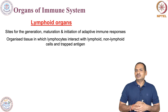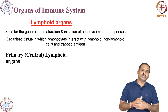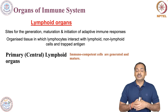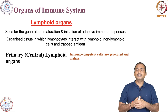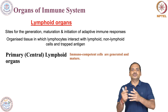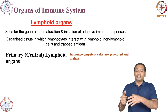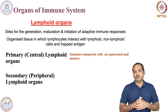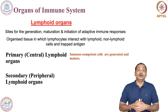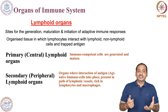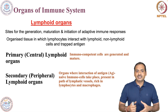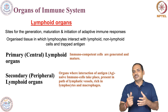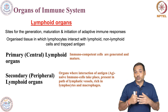Lymphoid organs are basically of two major kinds. One is the primary or central lymphoid organ, which is the site for the generation of immunocompetent immune cells or lymphocytes, where these cells will mature and then move to another site where they will encounter antigen. The other organ where they move is called the secondary or peripheral lymphoid organ, located in different parts of the body. Over there they encounter antigen and induce the appropriate immune response, which can also travel through specialized vessels called lymphatic vessels.